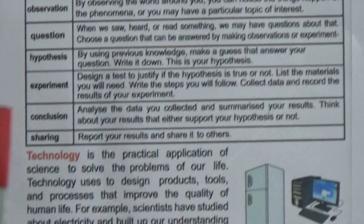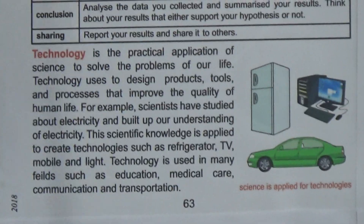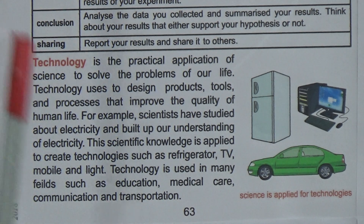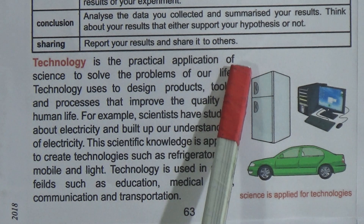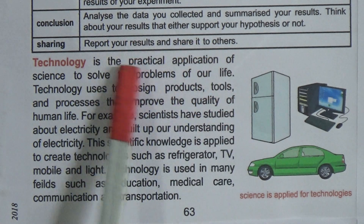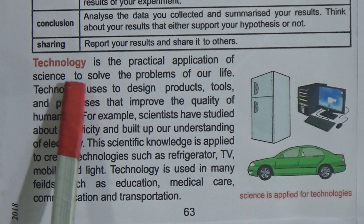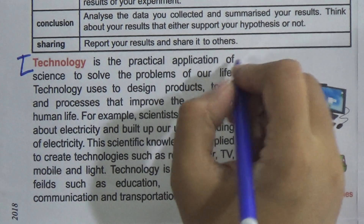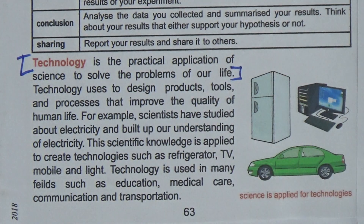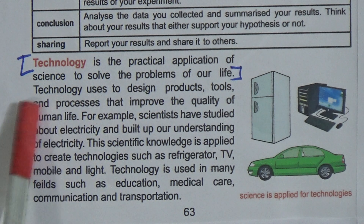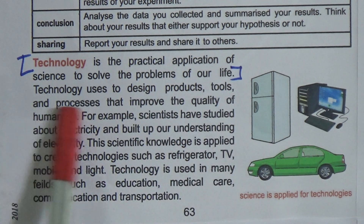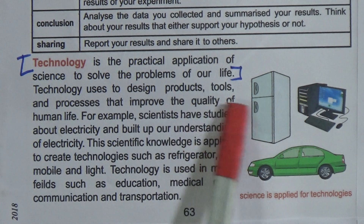We just learned what science is and how the scientific method works. Now come to technology. Technology is the practical application of science to solve the problems of our life. That means technology totally depends on science. Technology is used to design products, tools, and processes that improve the quality of human life.